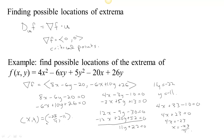Our next question is: knowing that the gradient is zero at this location — so to first order, there's no direction you can go to increase or decrease the value of f — are we at a min, a max, or something in between, which we'd call a saddle? How can we tell? The answer has to do with examining the second derivative.